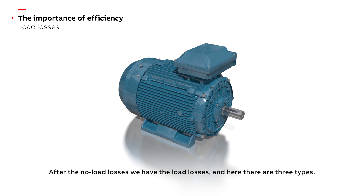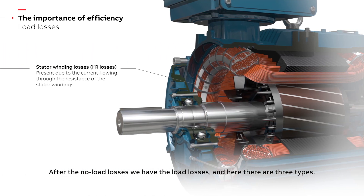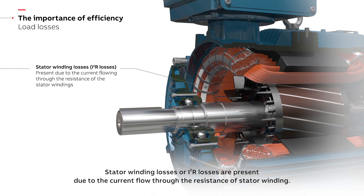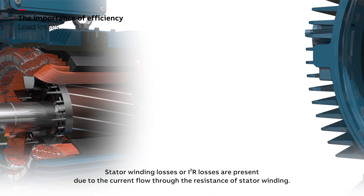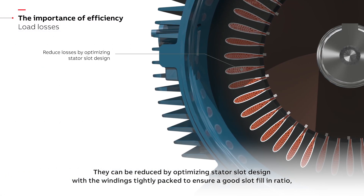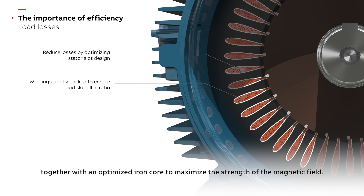After the no-load losses, we have the load losses, and here there are three types. Stator winding losses, or I squared R losses, are present due to the current flow through the resistance of the stator winding. They can be reduced by optimizing stator slot design with the windings tightly packed to ensure a good slot fill ratio, together with an optimized iron core to maximize the strength of the magnetic field.